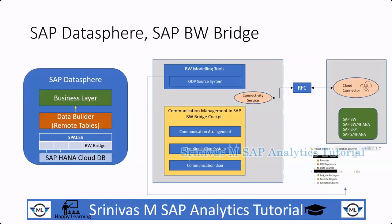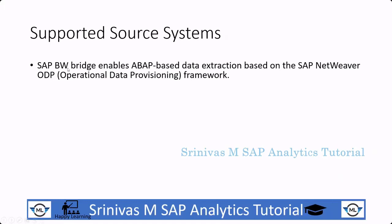Using the on-premise connection, we can bring data to SAP Datasphere. SAP Datasphere itself provides numerous connection mechanisms for non-SAP source systems as well. SAP BW Bridge enables ABAP-based data extraction based on SAP's ODP framework. The first source system connection type is ODP SAP, where ABAP extractors available in SAP ECC and S4HANA on-premise can be used to extract data from standard and custom data sources.